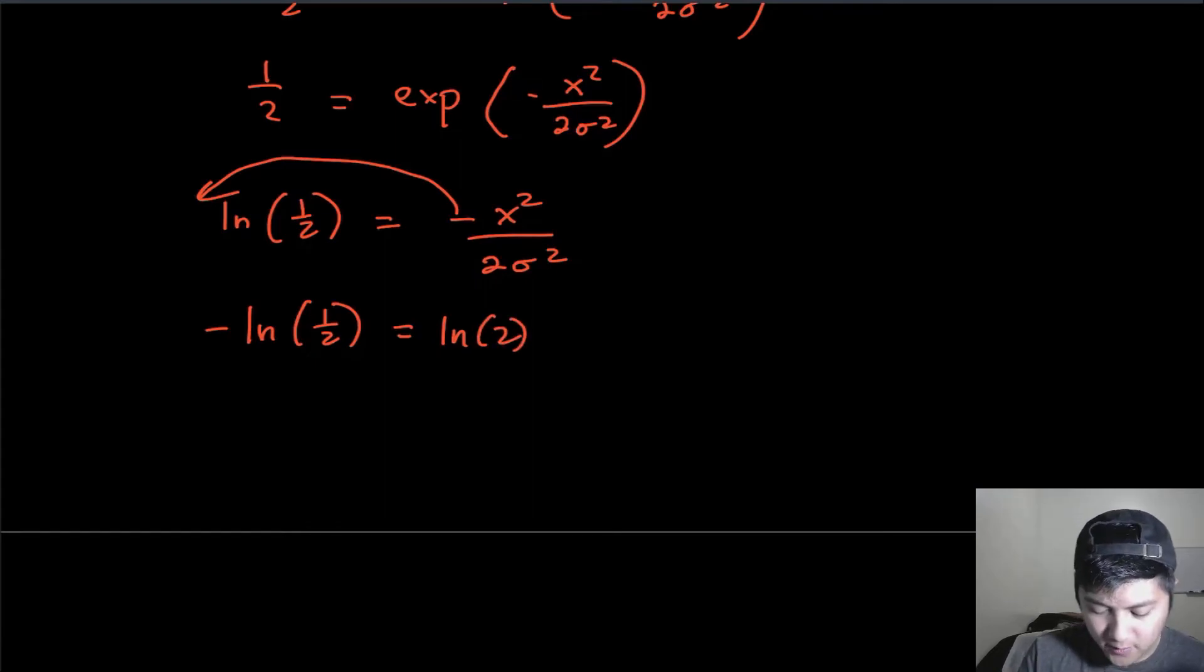which can be rewritten as log of 2 just by rule of logarithms. If you remember your rule of logs, if you have something like A log x, you can convert that to log x to the A, but that's usually done the other way around. In this case, A is equal to minus one.